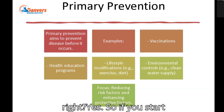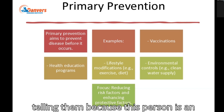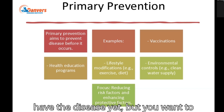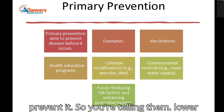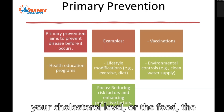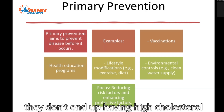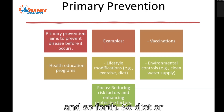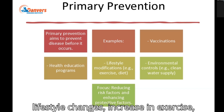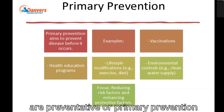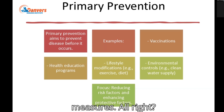So if you're telling someone because this person is an African American male and they don't have the disease yet, but you want to prevent it — you're telling them to lower their cholesterol and reduce the fatty foods they're taking so they don't end up with high cholesterol. Diet and lifestyle changes, increasing exercise, changes in diet — all of these are primary prevention measures.